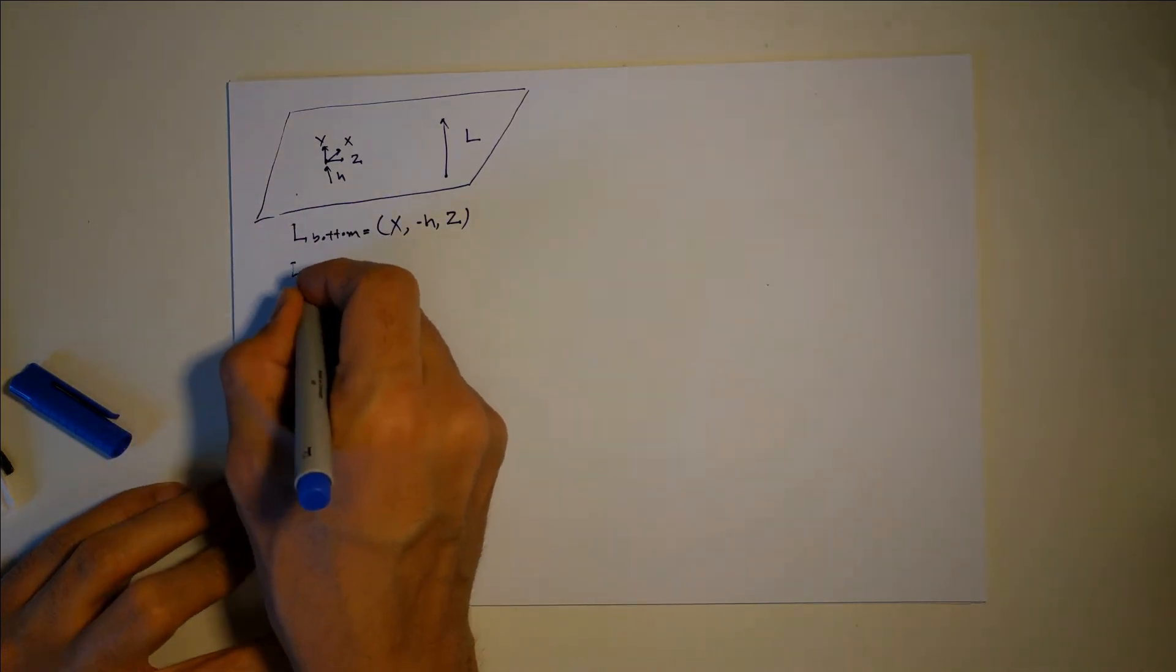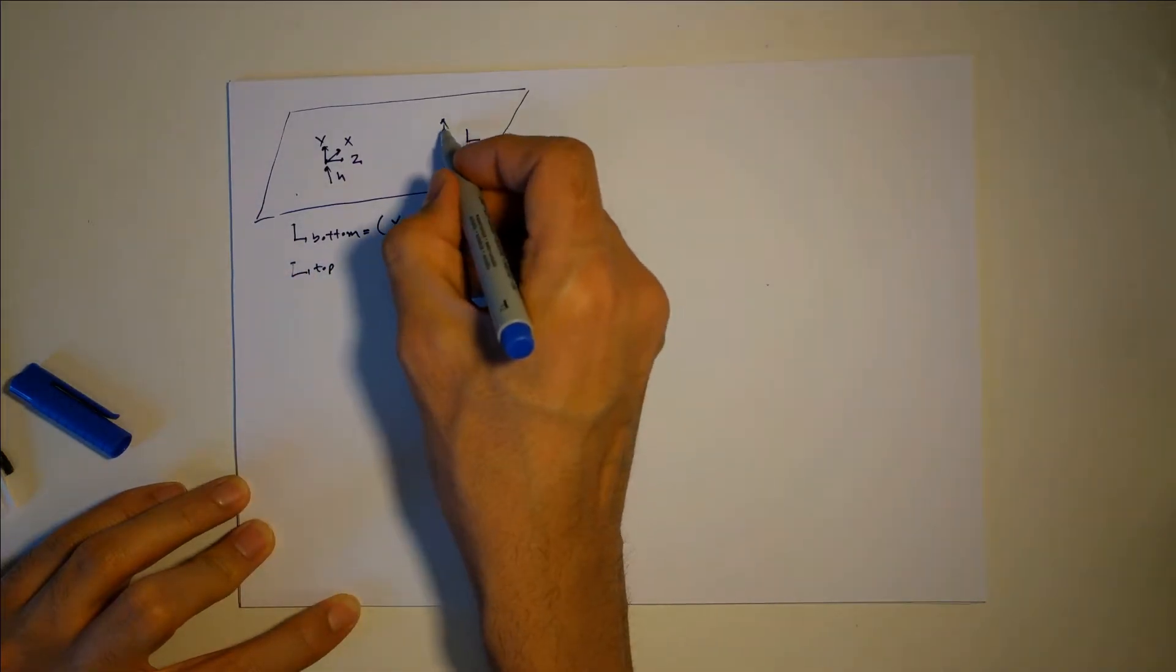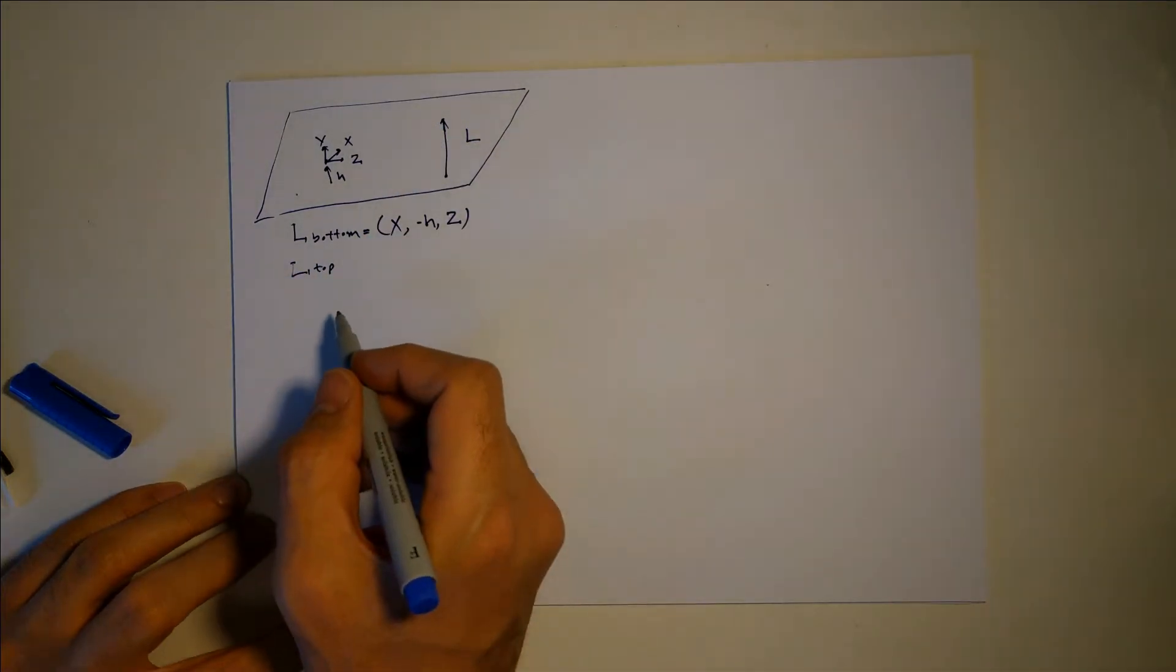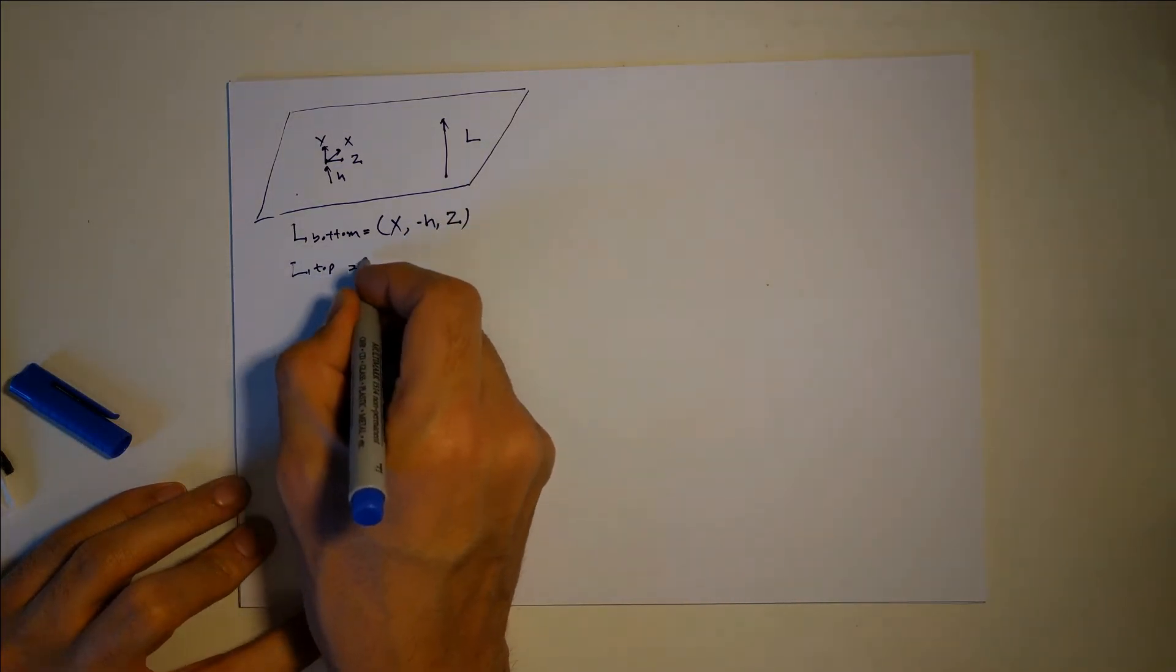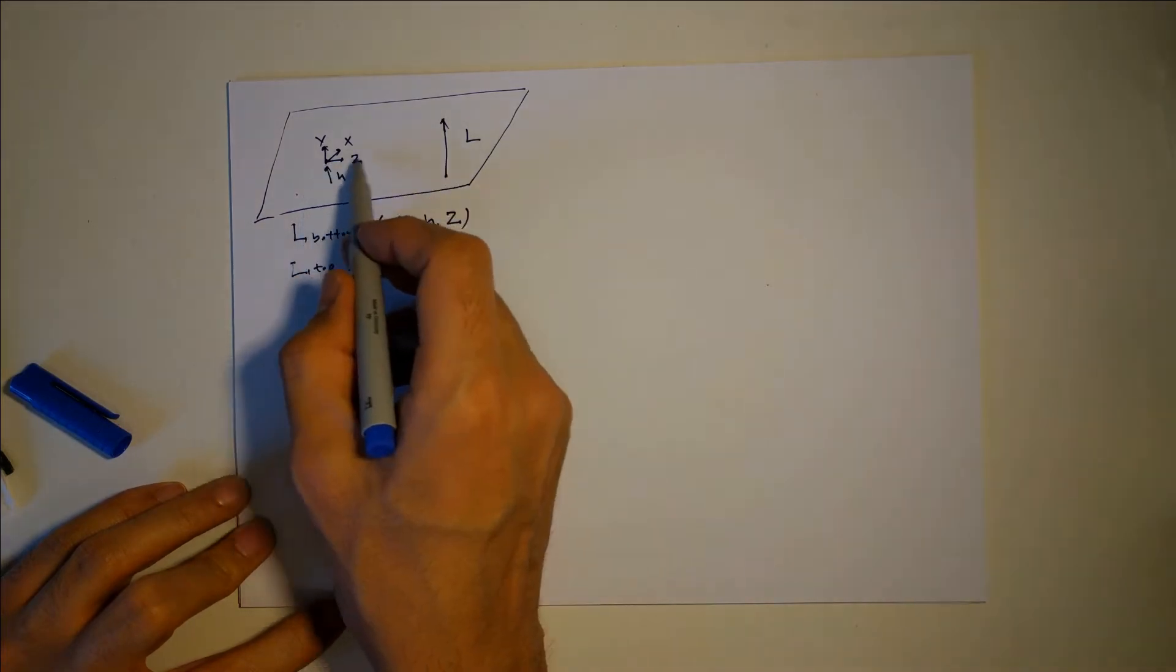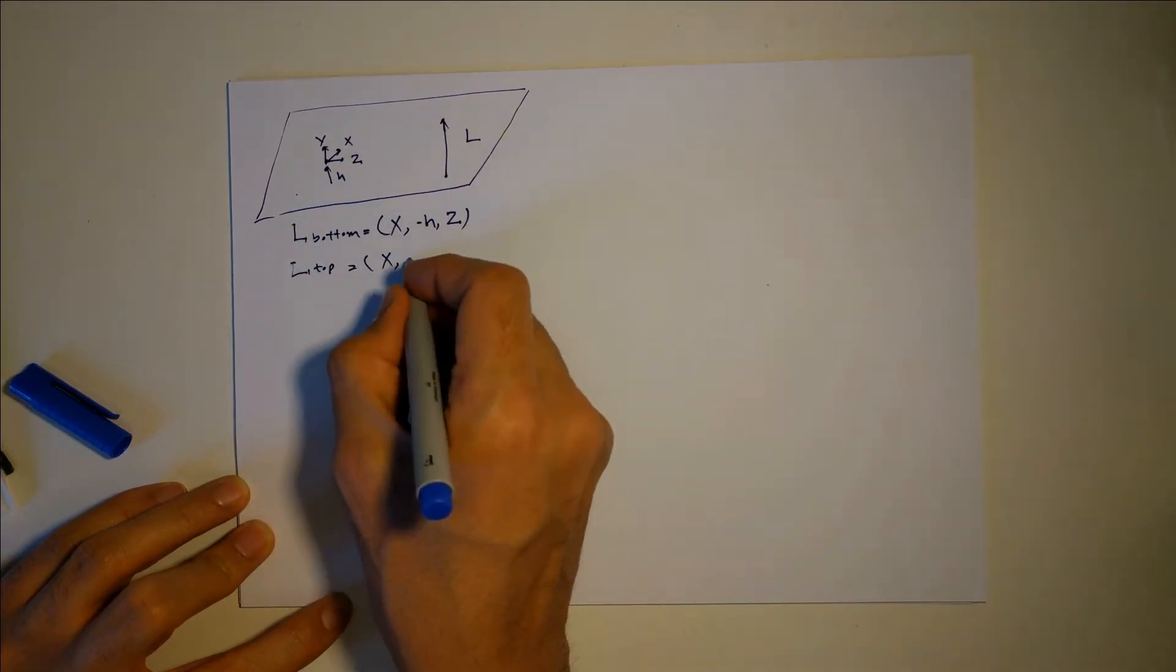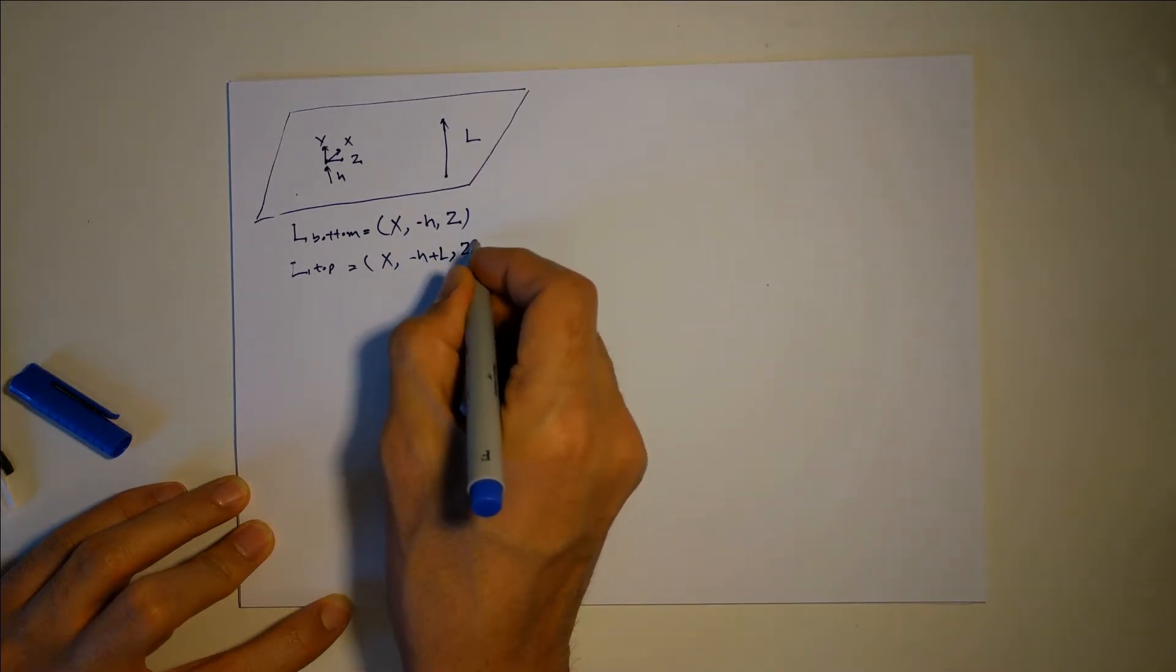And the top position of this monument or building that we have is x minus h plus L, because we are here, minus h plus L, and z.